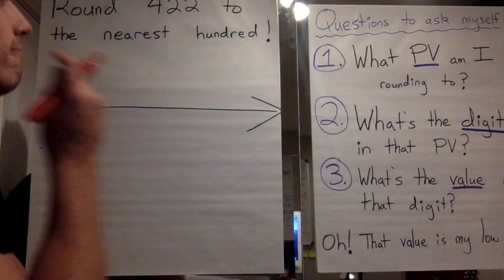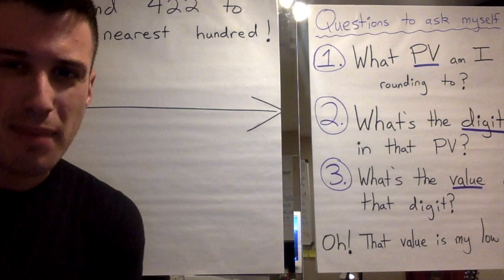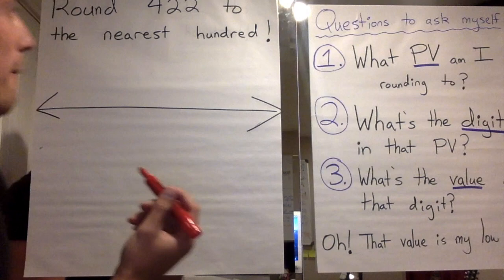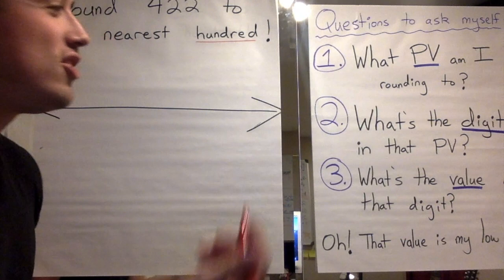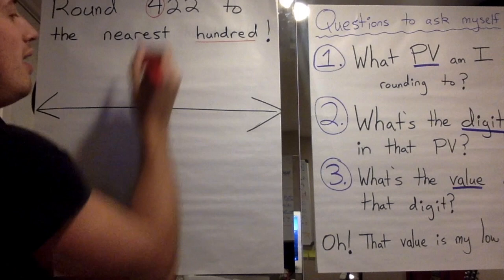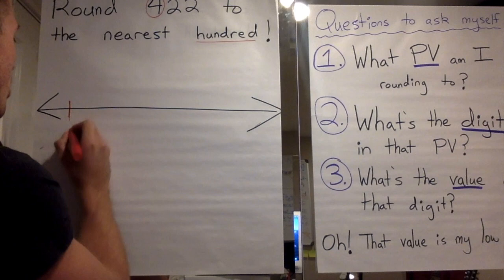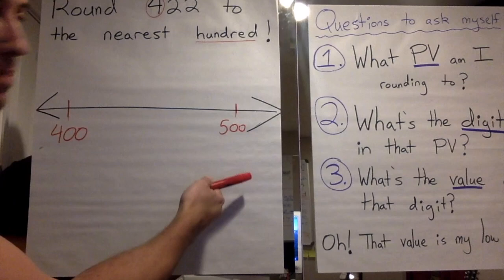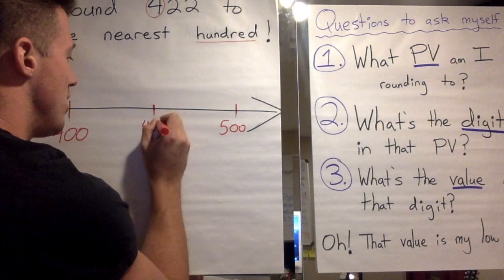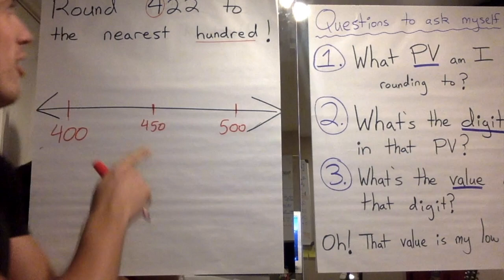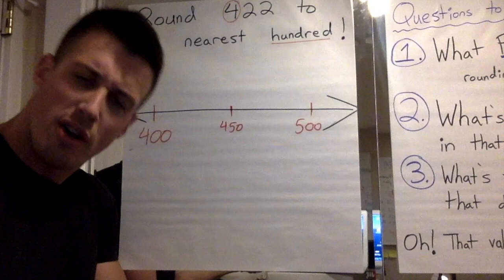I have $400, my midpoint of $450, and $500. A shorter way to set up that number line is by asking some simple questions. Step one: what place value am I rounding to? Hundreds. Step two: what's the digit in that place value? It's a four — so the value is four hundreds. My lower benchmark is 400, my upper benchmark is 500, and the midpoint in between is 450.